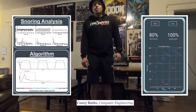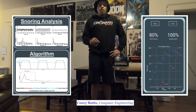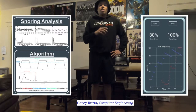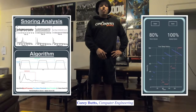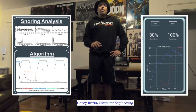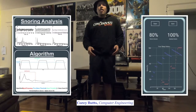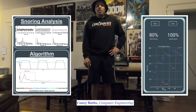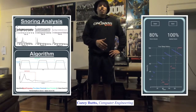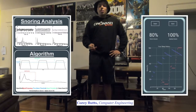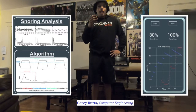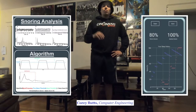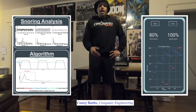To determine the apnea score, the application waits to see if your snore score goes above 80%, because above that threshold it can accurately determine that your breathing patterns are associated with your snoring. If there is a lapse in your snoring pattern for a certain amount of time, that is a good indication of sleep apnea, as it most likely means you have stopped breathing. As you have more lapses in breath, the apnea score goes up; as you snore more, the apnea score goes down.